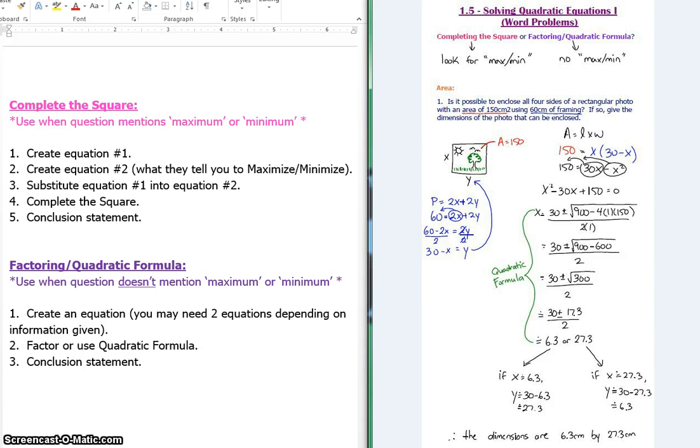When attempting quadratic equation word problems, it's nice to have some sort of a game plan. How am I supposed to tell if I'm supposed to be completing the square, or if I'm supposed to be factoring or doing the quadratic formula? Well, if the question asks you to find the maximum or minimum, you know that you have to complete the square. Because a maximum or minimum is a vertex, and to put something into vertex form, you have to complete the square.